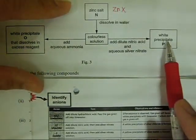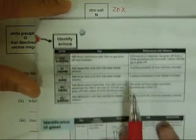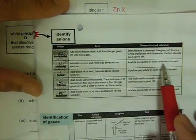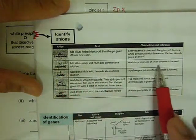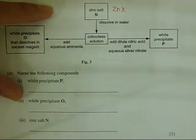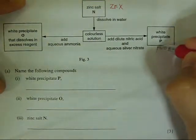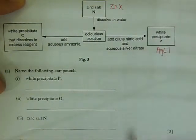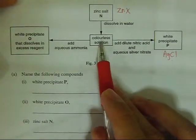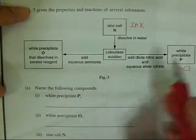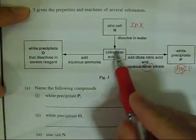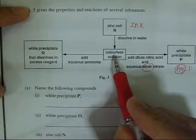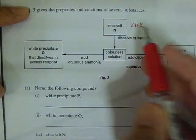The result is a white precipitate, so it must be silver chloride. This is a test for the chloride ion, and the white precipitate is silver chloride. The silver came from the silver nitrate reagent, but the chloride must have come from the colorless solution, which means the zinc salt is actually zinc chloride.